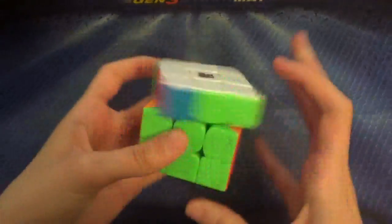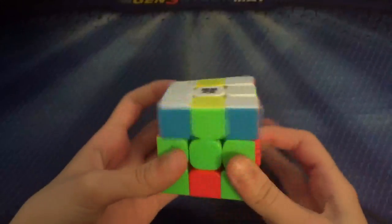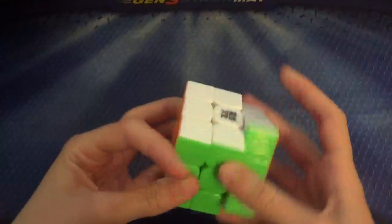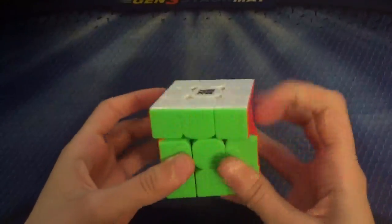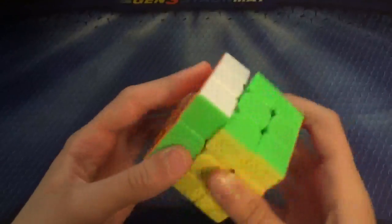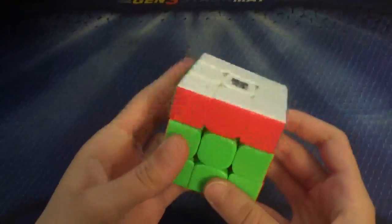The first event is 3x3. This is the Magnetic Moyu Weilong GTS V2. My goal is a sub-10.5 average and hopefully a sub-8 single, but if not just sub-9. I'd like to get a few sub-9s throughout the comp. There's only 3 rounds, so hopefully I'll make the second round.